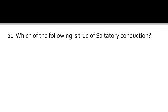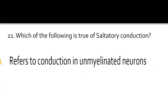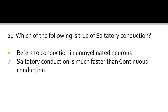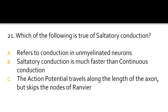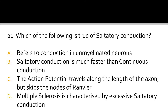Question 21. Which of the following is true of saltatory conduction? It refers to conduction in unmyelinated neurons. It is much faster than continuous conduction. The action potential travels along the length of the axon but skips the nodes of Ranvier. Multiple sclerosis is characterized by excessive saltatory conduction.